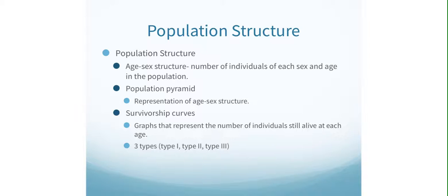Another great way to show how population structure is affected is to show how deaths affect population with survivorship curves. A survivorship curve is a graph that represents the number of individuals still alive at each age. There are three different types: type 1, type 2, and type 3. These types represent different strategies species use to adapt to their environment. I want you to leave space for each type and I'm going to give you a survivorship curve that shows what that looks like.